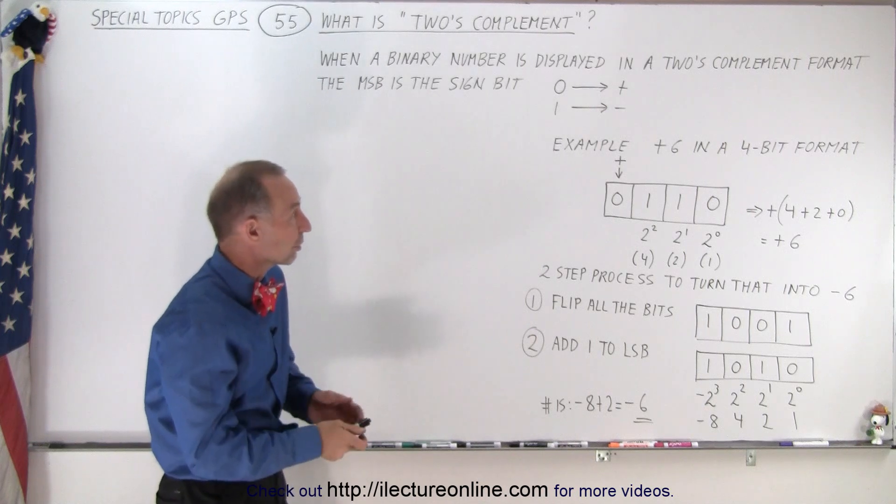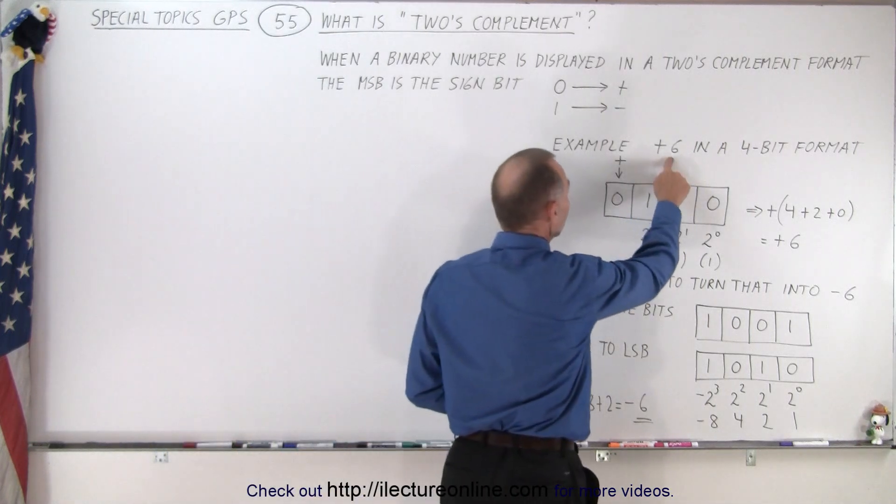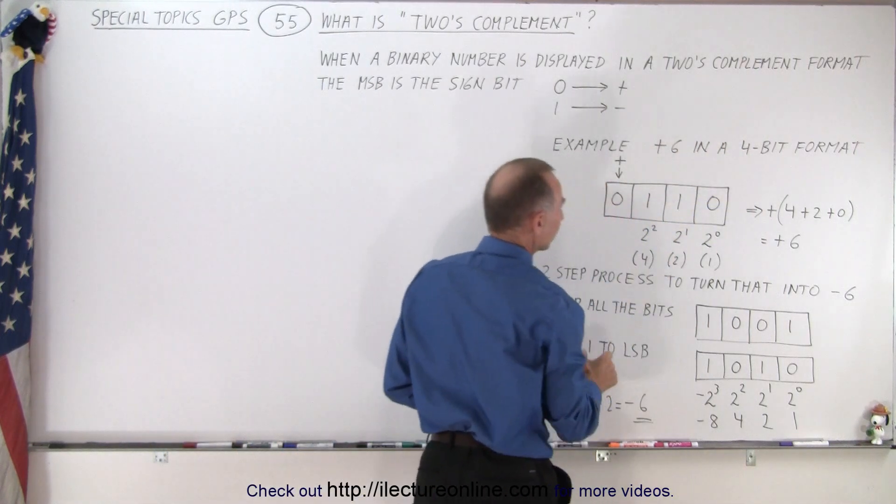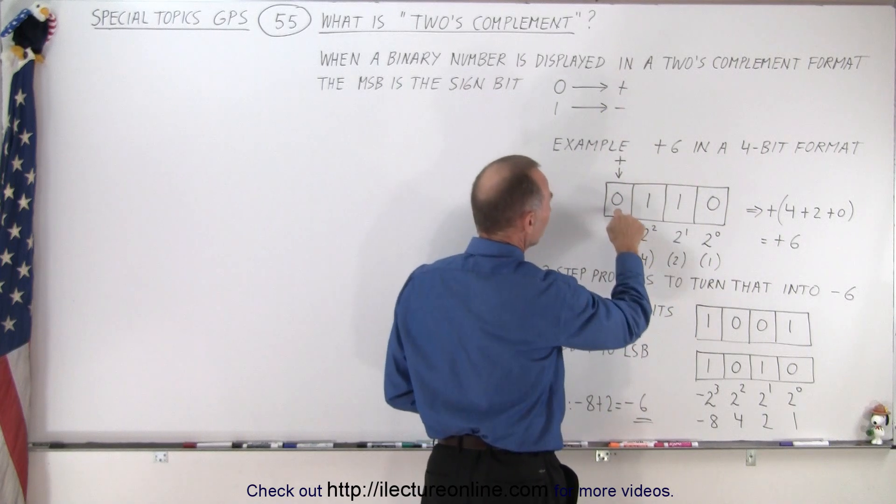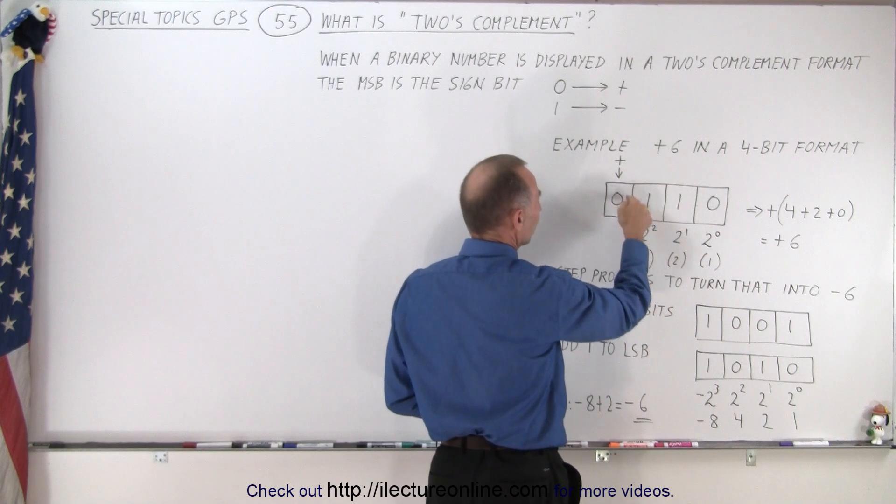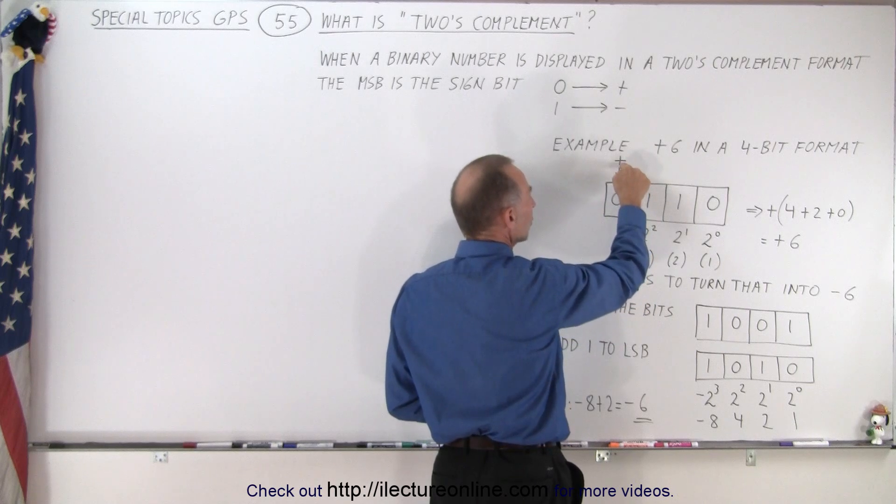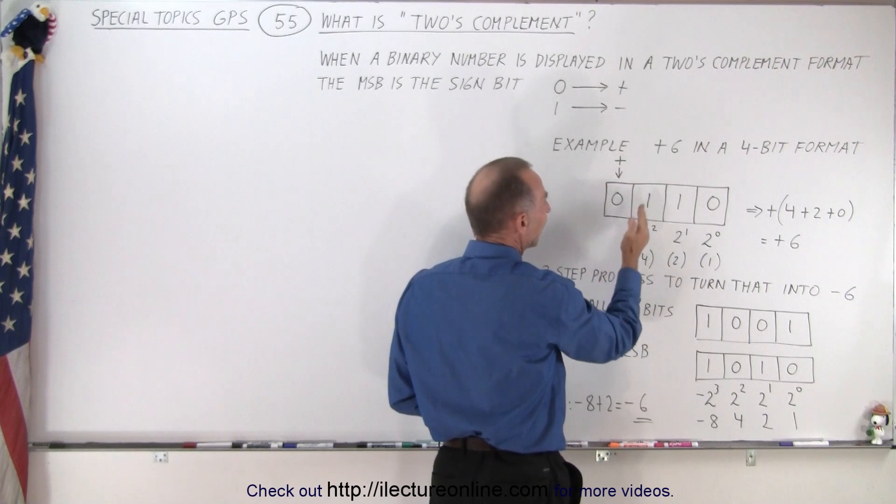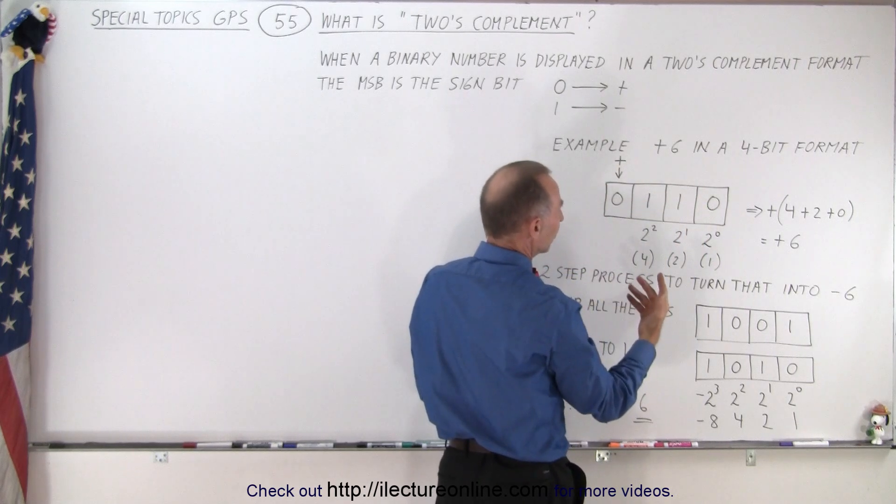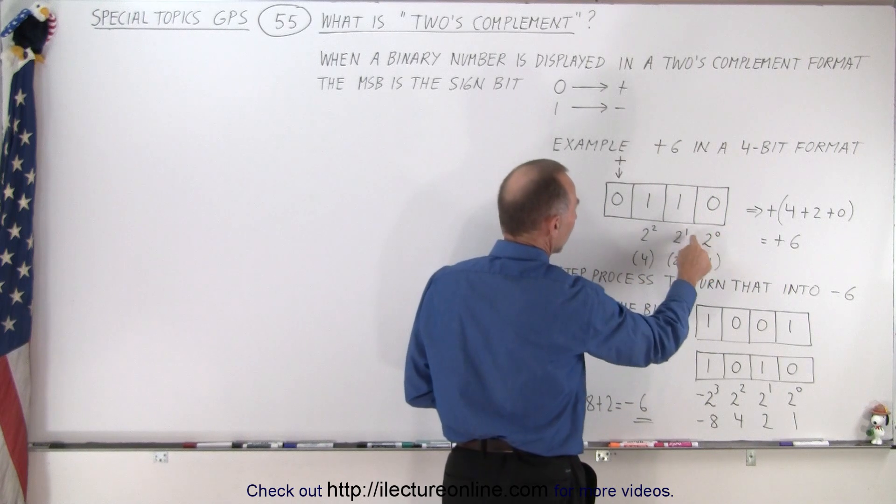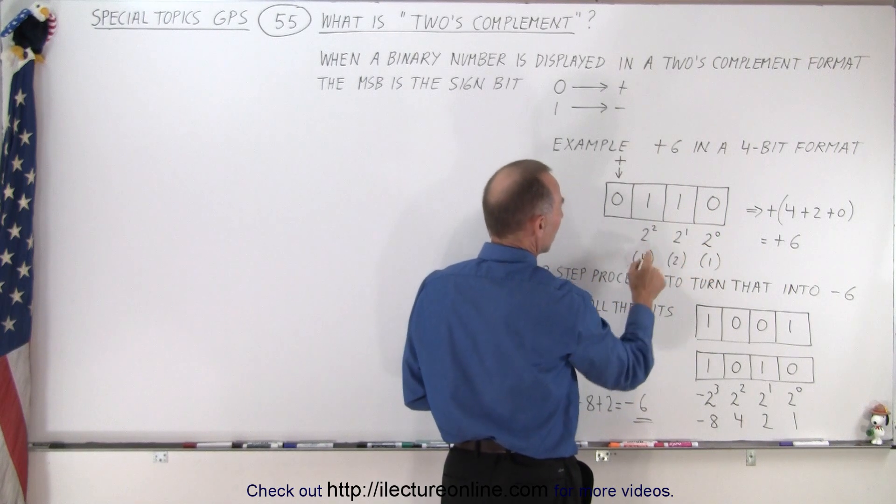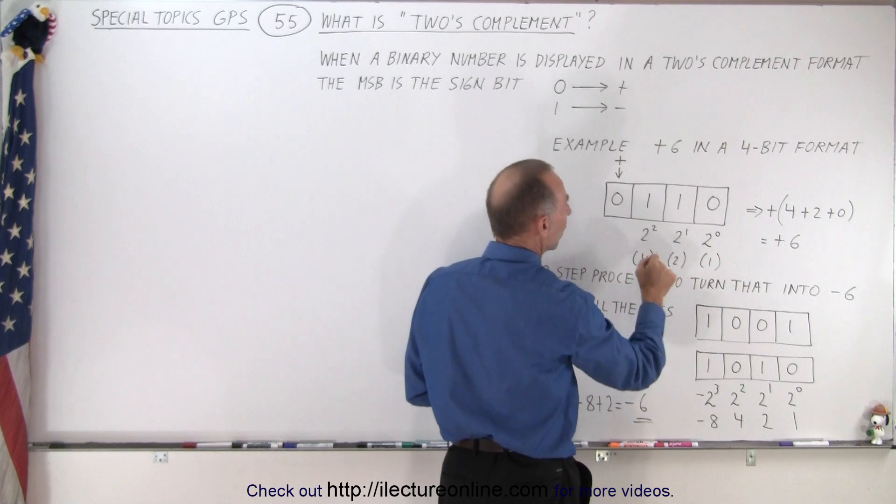So as an example, let's say we want to express the number plus 6 in a 4-bit format. So here are the 4 bits, and since the first bit is a 0, we know that the number will be plus and then the other 3 bits will give us the value of the number. So this is 2 to the 0 power, 2 to the first power, 2 to the second power. So this can be 4, 2 and 1.